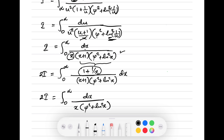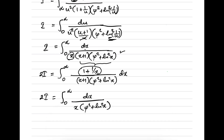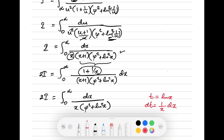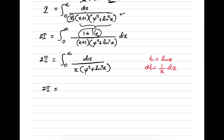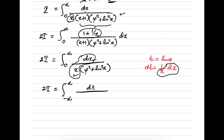We take another substitution: let t equal natural log of x, then dt equals 1 over x dx. We plug in, and the limits change to minus infinity to infinity. Since dx over x equals dt, we have 2 times i equal to the integral from minus infinity to infinity of dt over (phi squared plus t squared).